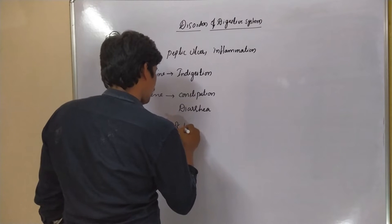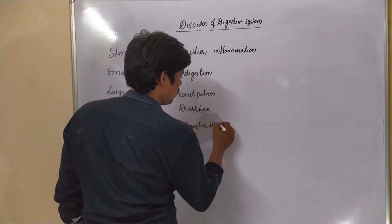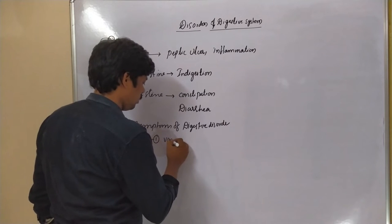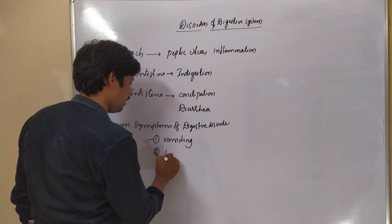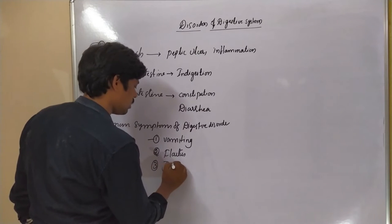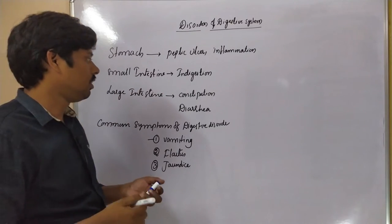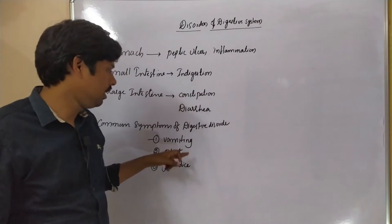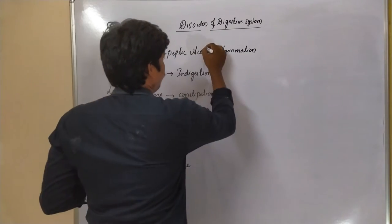The common symptoms of digestive disorders include: vomiting, flatus, and jaundice. These are the disorders we have to remember: peptic ulcer, inflammation, indigestion, constipation, diarrhea, and vomiting. Let us see each one in detail.